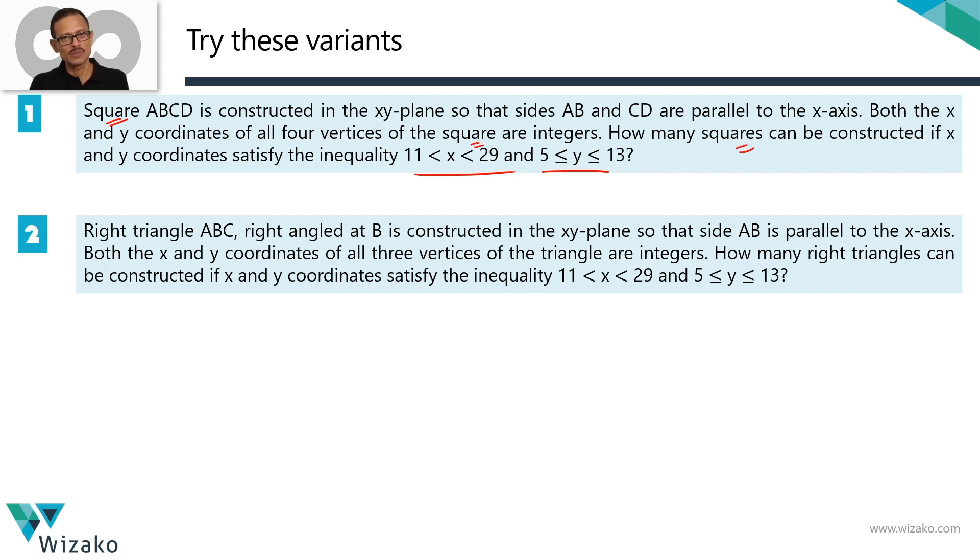All four vertices of the square are integers. The question is, how many such squares are possible? This is a little different from how we went about it. Up to the grid line formation, it's the same, but the way you count it is going to be different for this question. Get the answer and post it in the comment section.